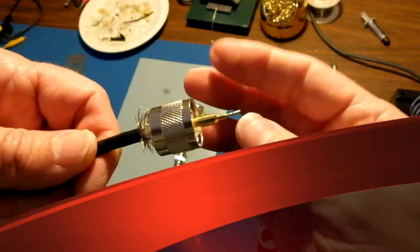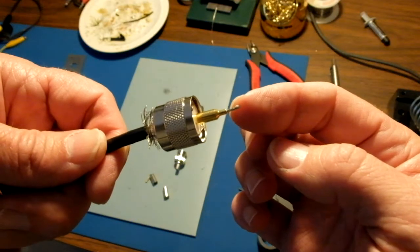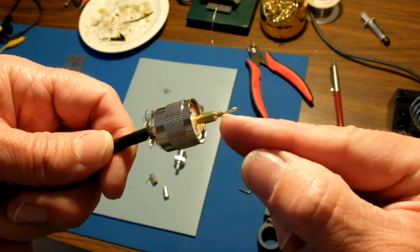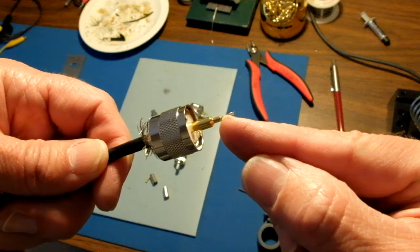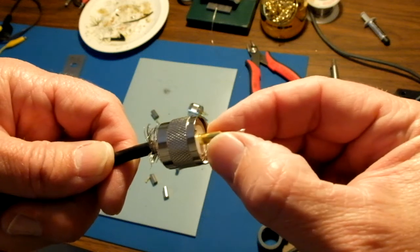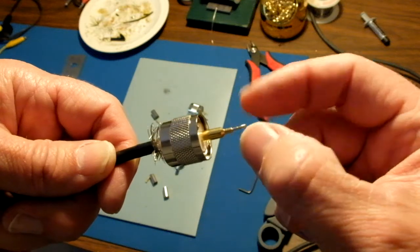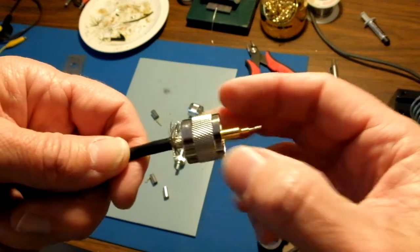After you've pushed it on, there's going to be some center conductor sticking out. And that's what you want. You're going to have to flow some solder down this center conductor into the tip, and then we're going to cut off the center conductor that's left sticking out.